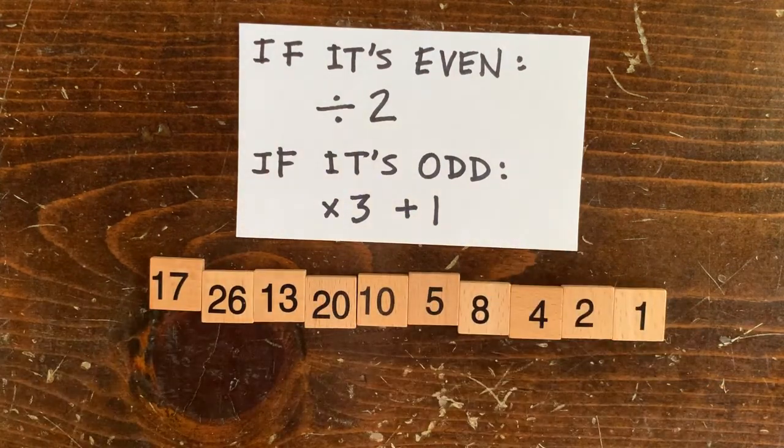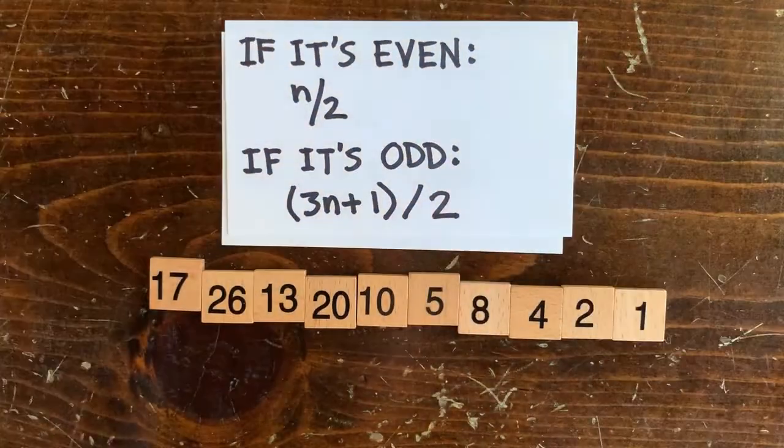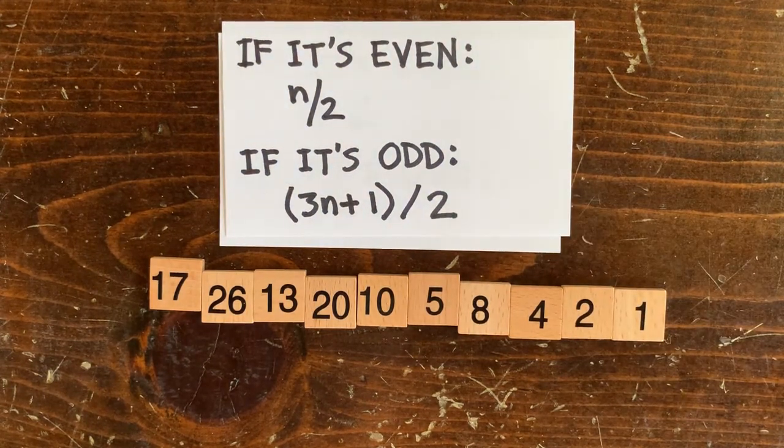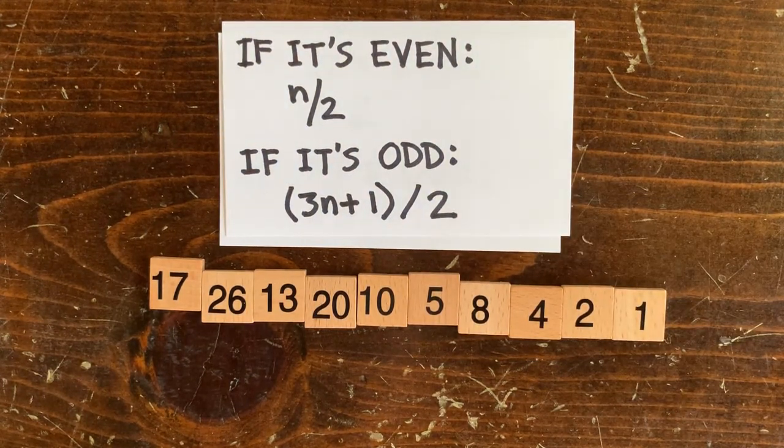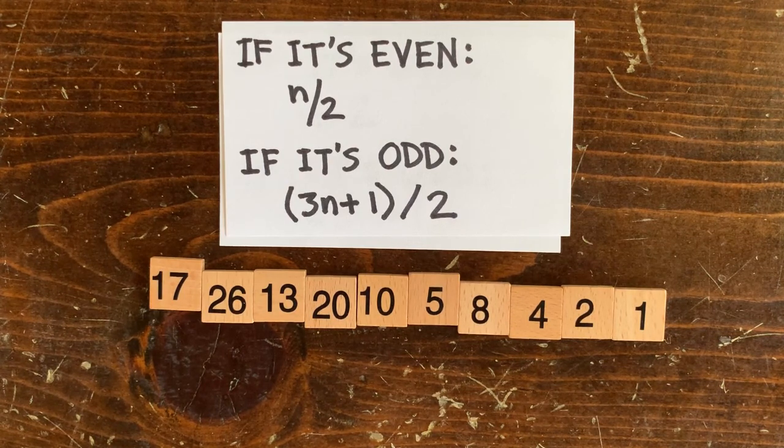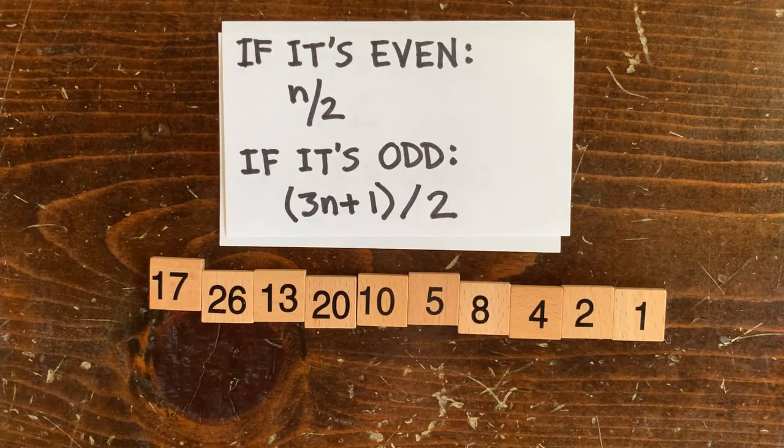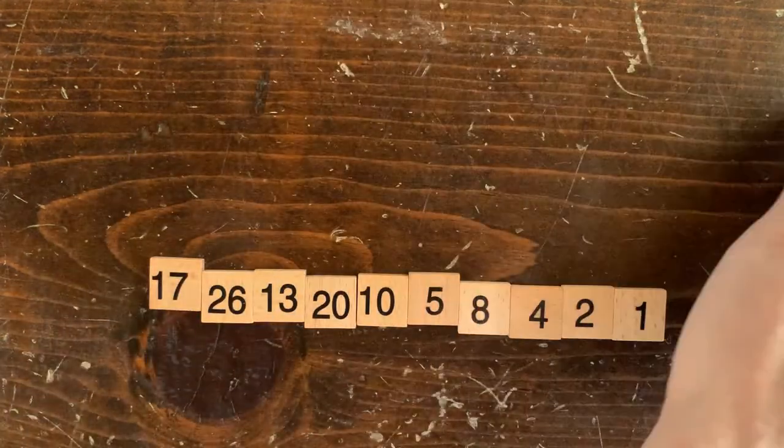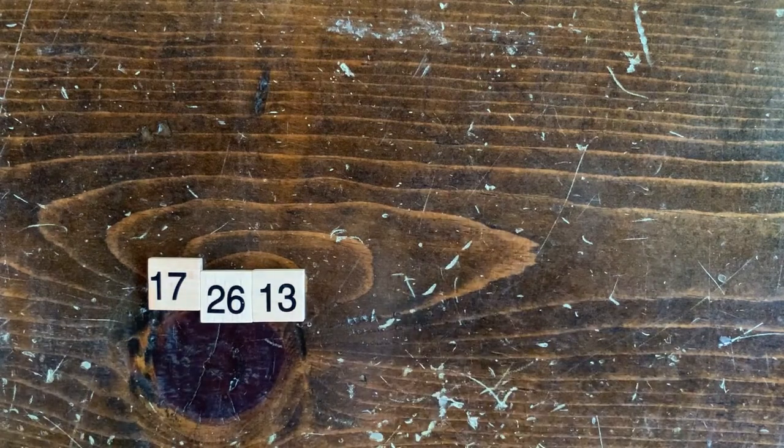This tightens things up without affecting whether we finally reach 1 or not. So the new rule is, if it's odd, multiply by 3 and add 1, then immediately cut it in half. If it's even, still just cut in half. In practice, we see that 3n plus 1 sequences now consist of about as many odd numbers as even numbers. In that case, why do 3n plus 1 sequences tend to go down instead of holding steady or going up?